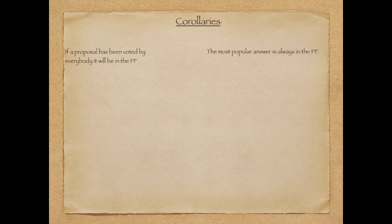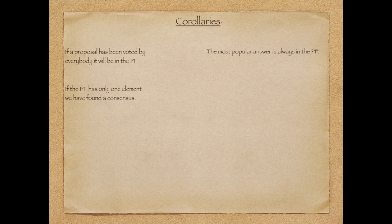So this form of voting, where we actually extract a Pareto Front, has a few characteristics besides being non-universal. The most popular answer is always in the Pareto Front because nothing can dominate it. If everybody has voted for one proposal, that will be in the Pareto Front. If the Pareto Front has only one proposal, we have found a consensus, or something consented by everybody. In fact, when people vote over here, we don't ask them if they agree with a proposal. We ask them to vote in favor of everything they can live with. So it's really a consent. We are trying to lower the requirement as much as possible.